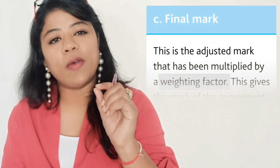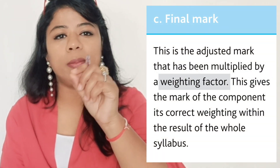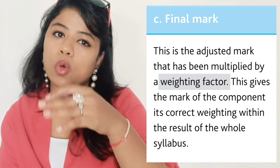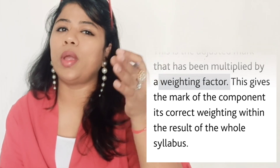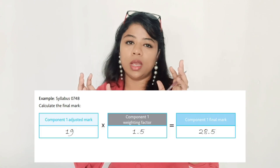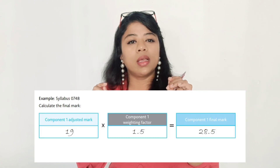After the adjustment, the final score is multiplied by a weighing factor. Every component in a subject has some weighing factor — it could be 1, meaning your score multiplied by 1; or 1.5; or 1.8 — depending upon the weighing factors decided by the Cambridge Assessment curriculum.